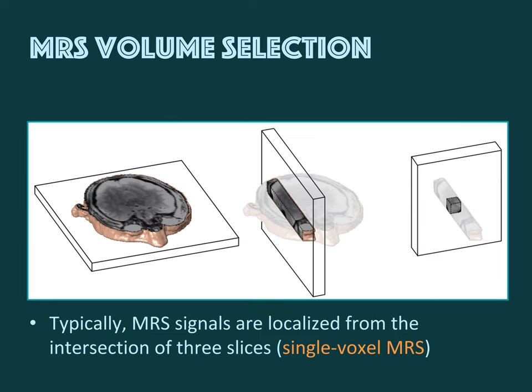In the MRS world, we frequently see the signal localized from a cuboid volume. This is essentially done by performing slice selection with band-selective RF pulses and field gradients three times, each time with a different gradient direction. In the first step we generate signal from a slice. The second step reduces the signal origin to a slab — the intersection of two perpendicular slices. And the third step reduces the signal again to the cuboid — the intersection of this slab with a third perpendicular slice. This is what we refer to as single voxel MRS.